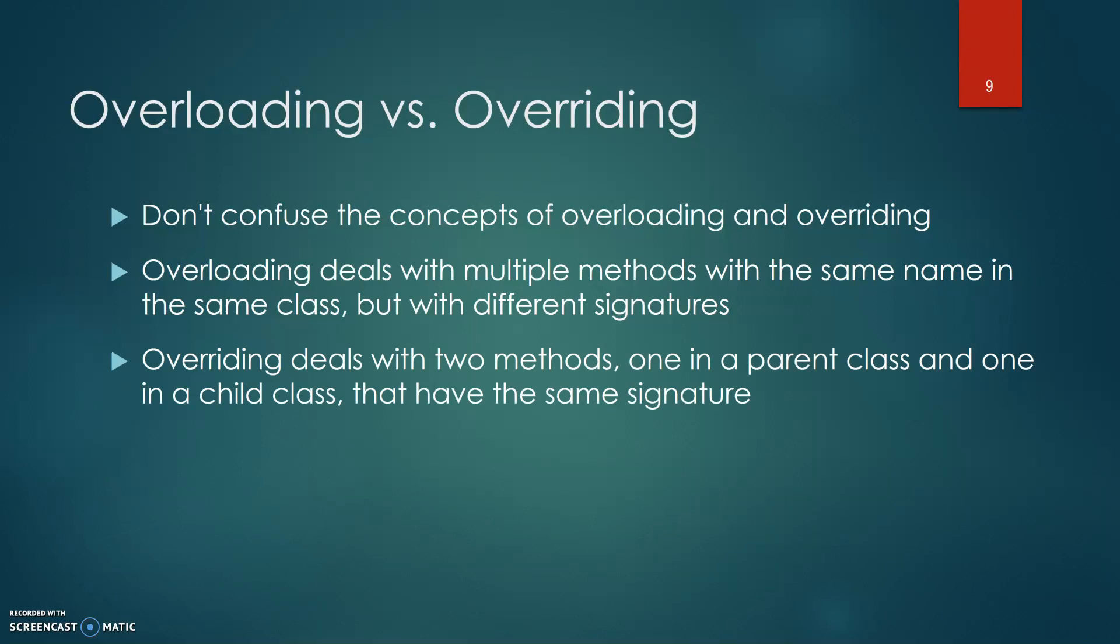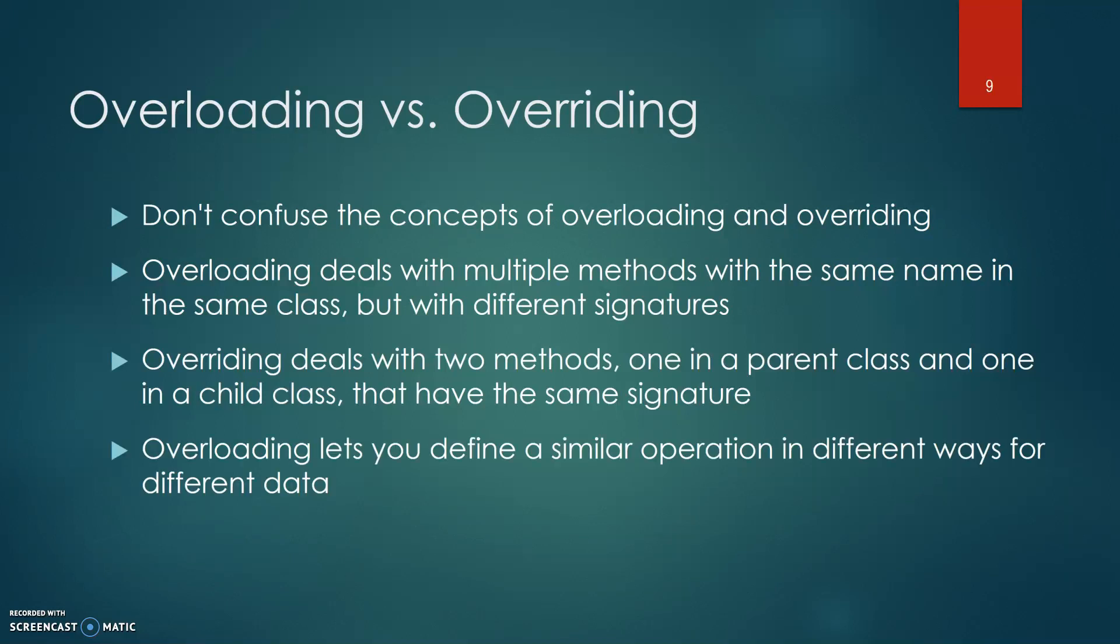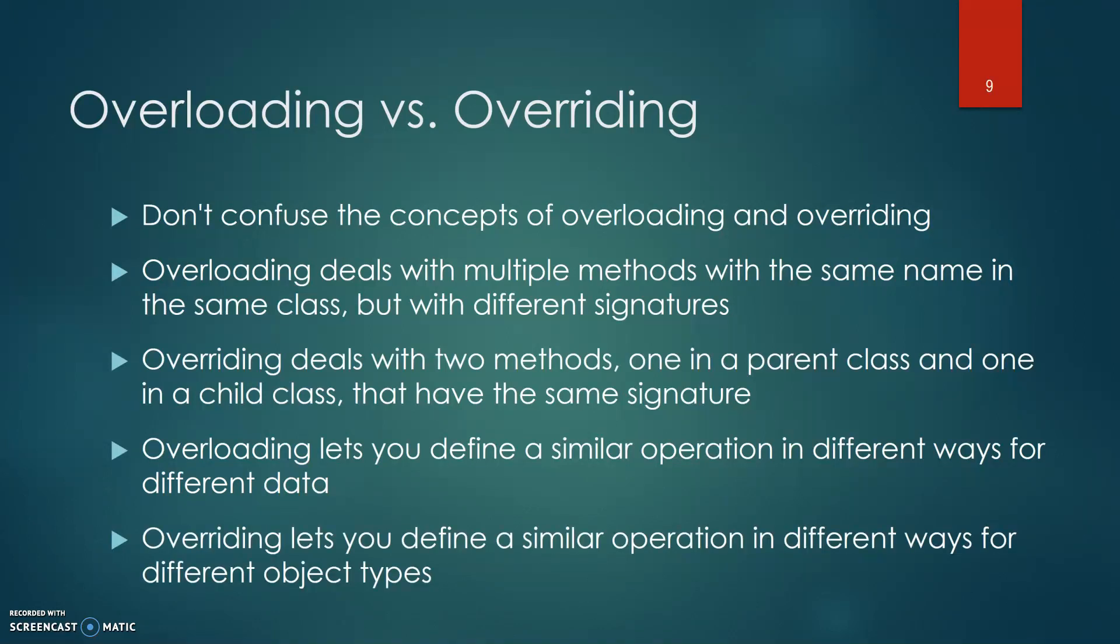Overriding deals with two methods, one in a parent class and one in a child class that have the same signature. Overloading lets you define a similar operation in different ways for different data. Overriding lets you define a similar operation in different ways for different object types.